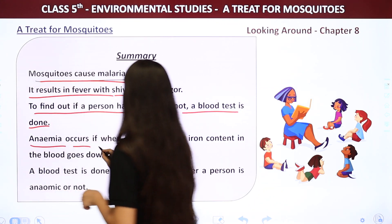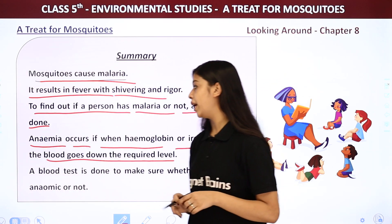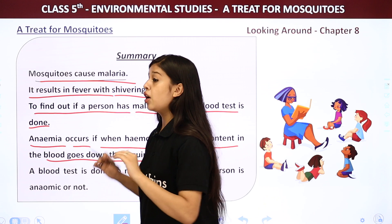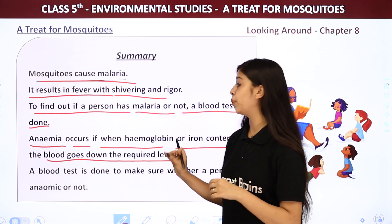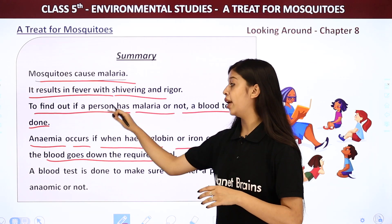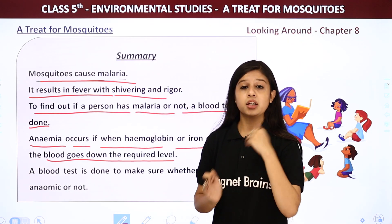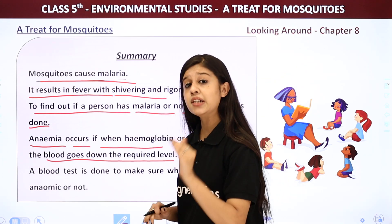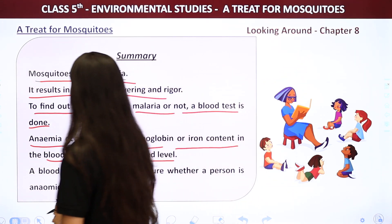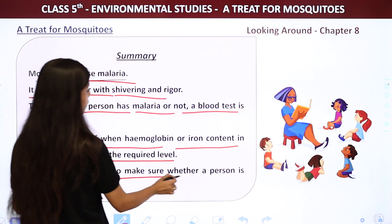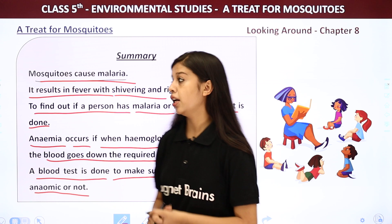Anemia occurs when the hemoglobin or iron content in the blood goes below the required level. The required level of hemoglobin is minimum 12 and maximum 16. If it goes below 12, you are an anemia patient. A blood test is also done to confirm whether a person is anemic or not.